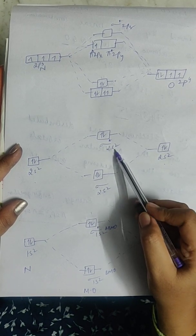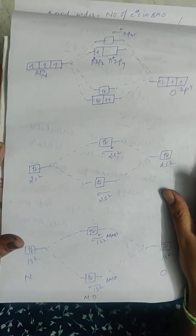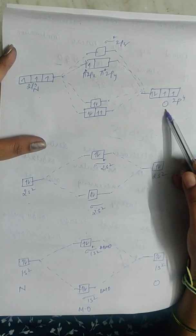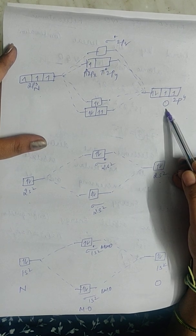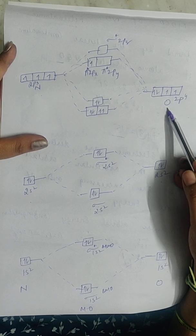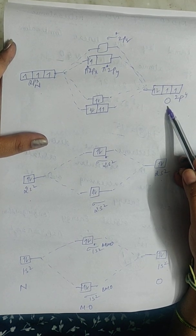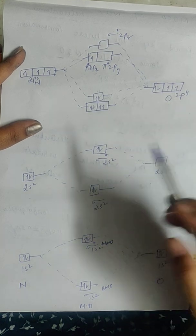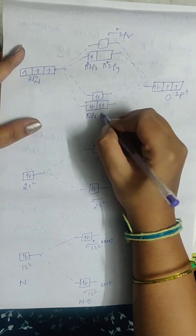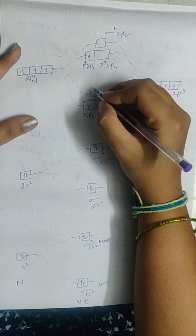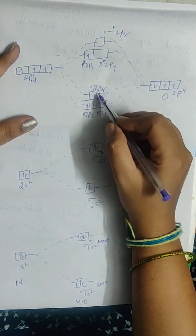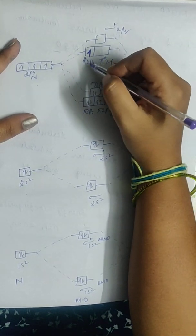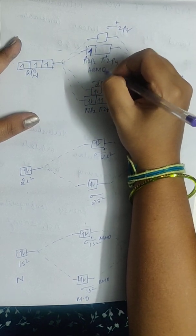Now we have the p-level electrons: 2p3 of nitrogen is combining with 2p4 of oxygen. So there are 3 electrons from nitrogen and 4 p electrons from oxygen, giving 7 electrons total. They are distributed in pi 2px, pi 2py, and sigma 2pz — so 6 electrons are filled here. Now there is one unpaired electron in pi star 2px1, that is in the antibonding molecular orbital level.